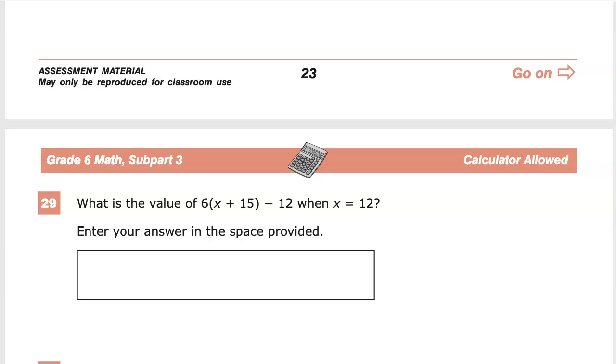Now x here is a variable, which means it can have a number of different values. Really the only way we can tell is if we lock it in by setting the entire equation equal to something and then x has to have a value, or we can just tell you what the value is, which is what they did here. They said x is 12, just in case you were wondering.